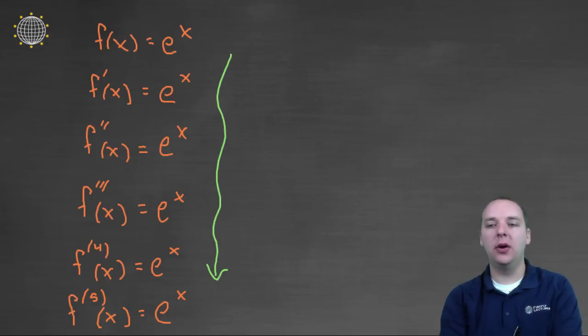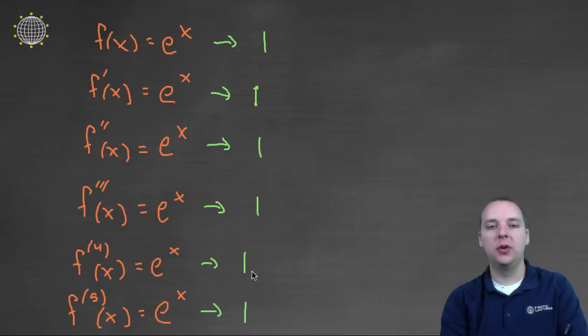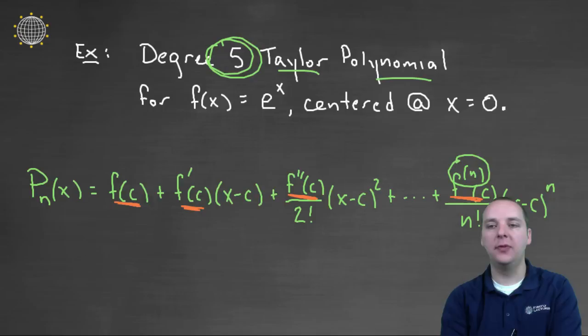Now after you compute all those derivatives you also have to plug in zero. So if you plug in zero this will be one. And actually all of these will be one. And again if this was a different function that had derivatives that changed then these numbers would all be different. But like I said this is a light example just trying to get our feet wet here.